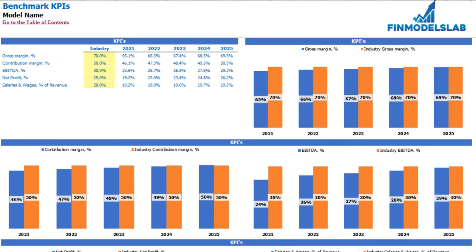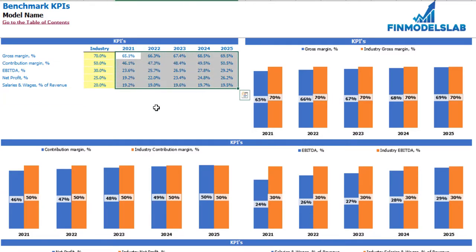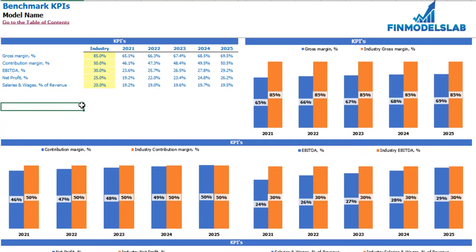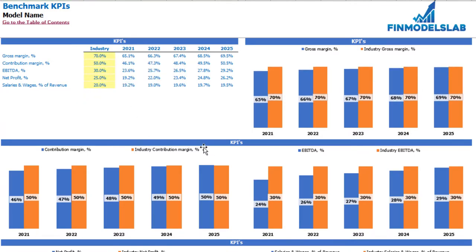On the benchmarks KPI tab you may compare your financial outputs with your industry benchmarks. There are five benchmarks: gross margin, contribution margin, net profit, EBITDA, and salaries and wages as a percentage of revenue. The model-produced values are shown alongside yellow cells where you can input your industry benchmarks — for example, a gross margin of 85% for your industry. Below, orange columns show industry benchmark values and blue columns show the model's values for easy graphical comparison.